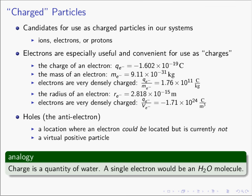If we need objects which possess charge so that we can exploit them in our electrical systems, we have several candidates from your study of physics and chemistry. Ions are molecules that have missing or extra electrons, so they have a net positive or negative charge. Electrons themselves have a charge — they're negatively charged. And protons also have a charge. Any of those three could be used as charged carriers in our electrical systems.